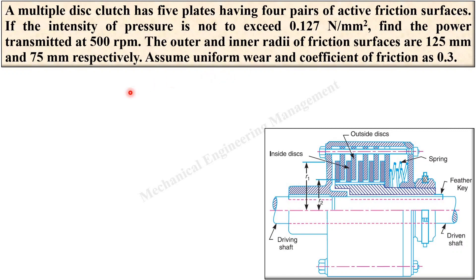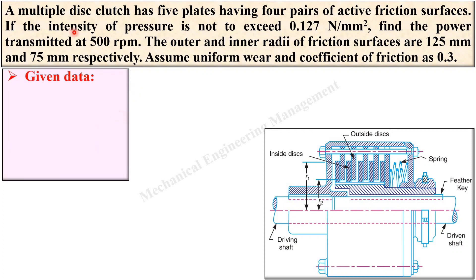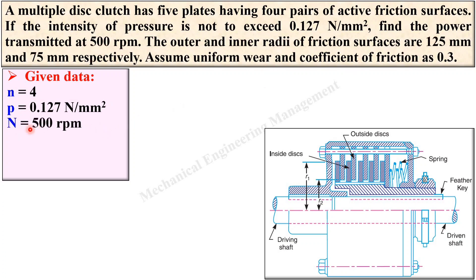First of all, write down the given data in symbolic notation. Total five plates having four pairs of active friction surfaces, so n = 4. The maximum pressure is 0.127 Newton per mm square. Power transmitted at 500 rpm, so N = 500. Outer radius r1 = 125 mm and inner radius r2 = 75 mm. Coefficient of friction mu = 0.3.